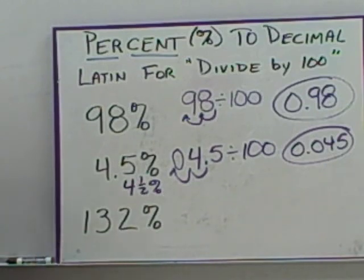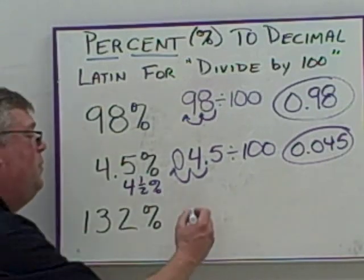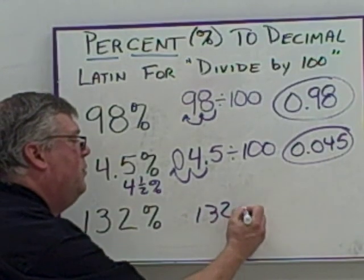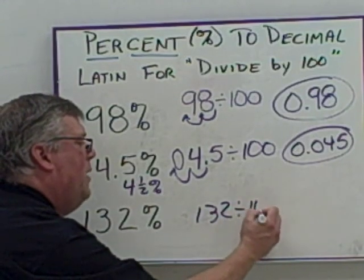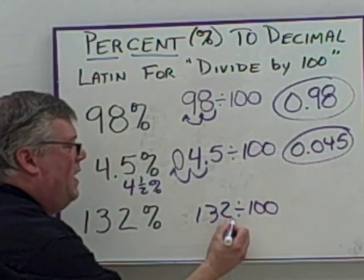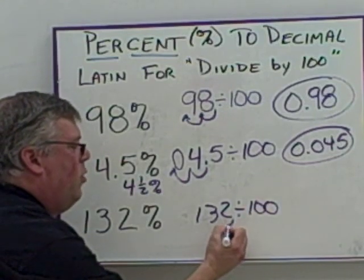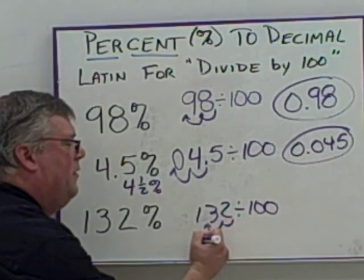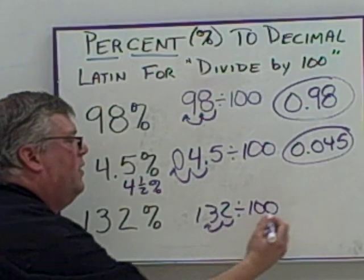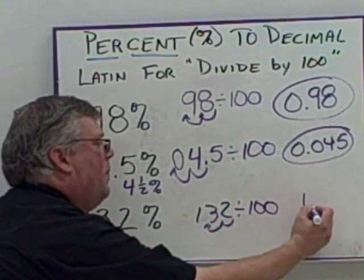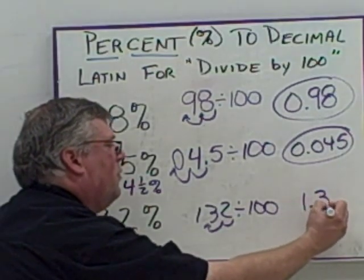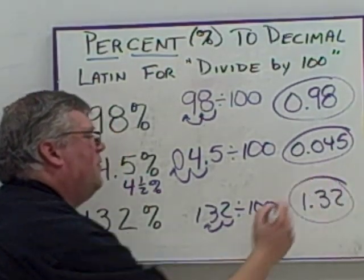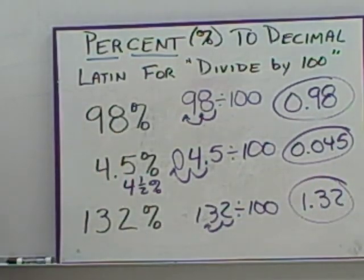Here we have 132%. 132 divided by 100 — the decimal point is here, I go over one, two place values, and this makes it 1.32. That's my answer for that one.